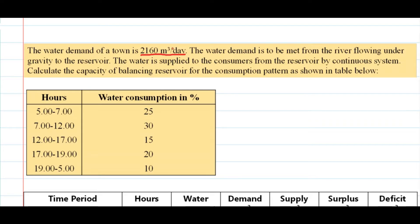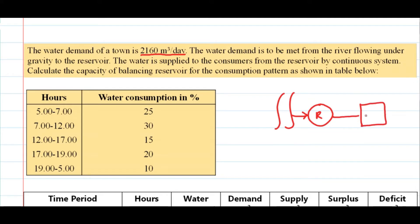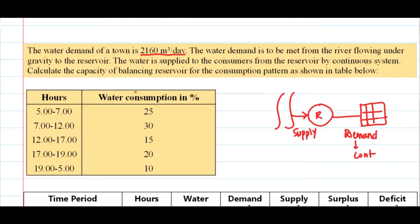The demand is to be made from the river flowing under gravity to the reservoir. So if there is a reservoir and here is the river, the demand is made through the river to the reservoir. Here there is the distribution system to the consumers. The water supply to the consumers from the reservoir will be a continuous system. Calculate the capacity of the balancing reservoir for the consumption pattern as shown in the table.